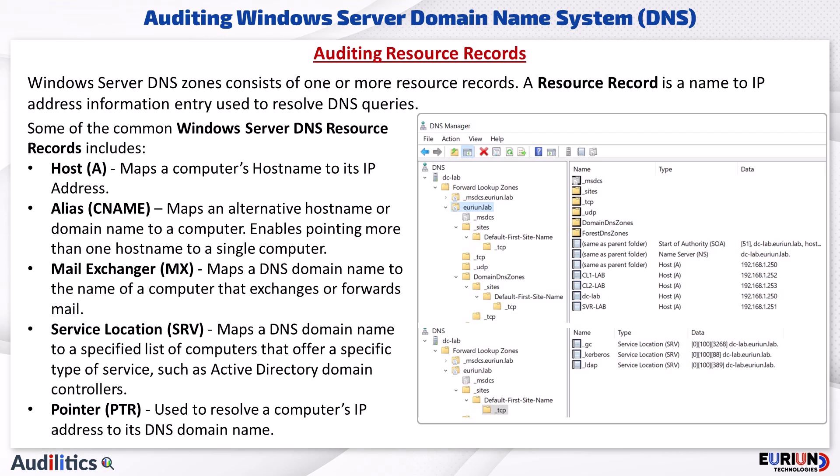The alias or CNAME record maps an alternative hostname or domain name to a computer. The CNAME record enables pointing more than one hostname to a single computer. For example, if we have a computer with a long hostname, we can create a CNAME record with a shorter version of the hostname to easily access it. CNAMEs are commonly used to customize web addresses, for example adding 'www' before a website name.